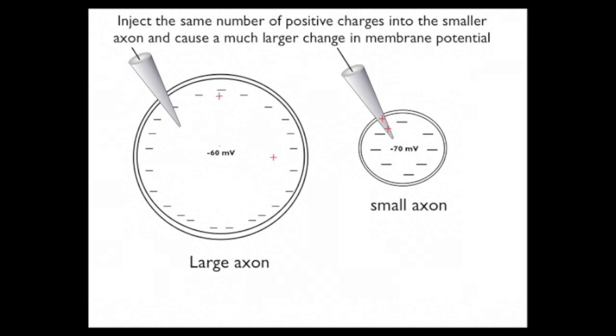The capacitor doesn't store as many charges. It's smaller. Now watch what happens. I inject the same number of positive charges in, but I can negate so many more because there's just a fewer number to negate.